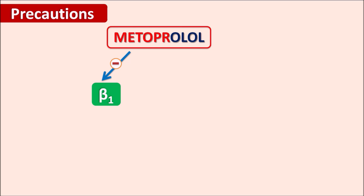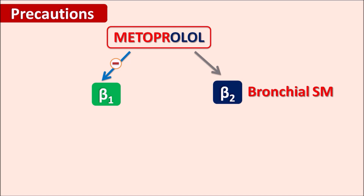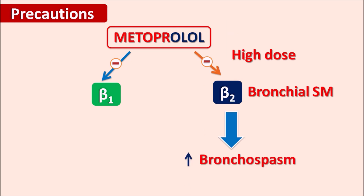Metoprolol is a cardioselective beta blocker, primarily blocking beta-1 receptors on the heart with very little activity on beta-2 receptors, which are present on various smooth muscles including bronchial smooth muscle. However, at high doses it can block beta-2 receptors, causing increased bronchospasm. Patients taking high-dose metoprolol should be carefully monitored for symptoms of bronchospasm such as difficulty breathing and wheezing.